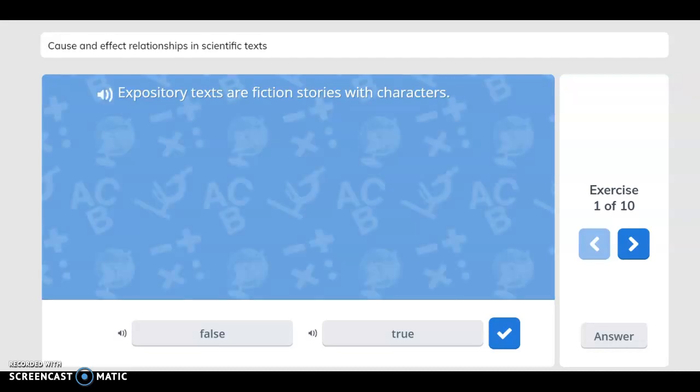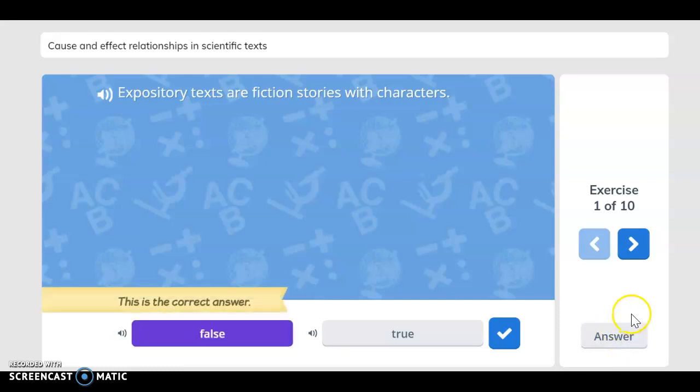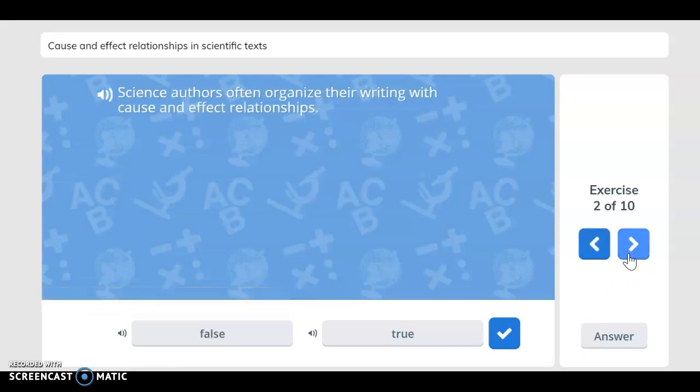Expository texts are fiction stories with characters. Is that false or is that true? You said false. You are correct. Science authors often organize their writings with cause and effect relationships. If you said true, you are correct.